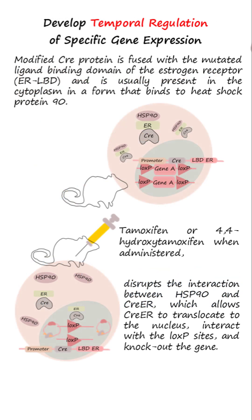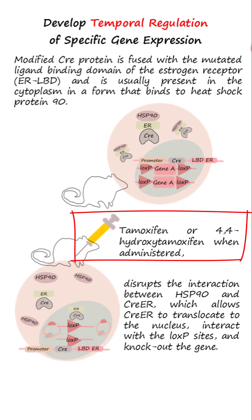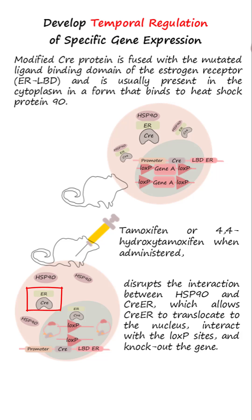Temporal control over expression of the gene of interest may be achieved by using a modified Cre protein fused with the mutated ligand-binding domain of the estrogen receptor. The fused Cre protein, called Cre-ER recombinase, is usually present in the cytoplasm in a form that binds to heat shock protein 90 (HSP90). When tamoxifen or 4-hydroxytamoxifen is administered, the interaction between HSP90 and Cre-ER is disrupted, allowing Cre-ER to translocate to the nucleus.